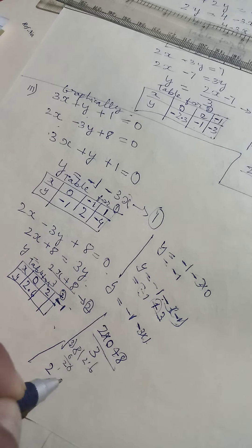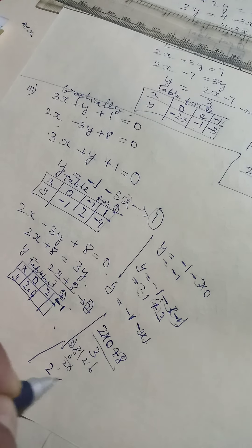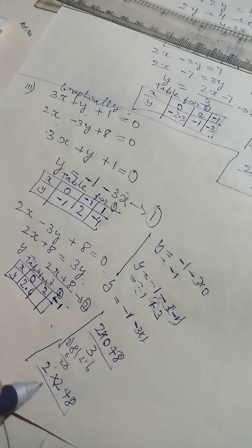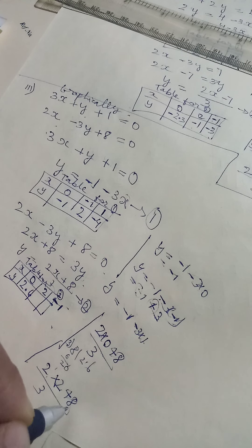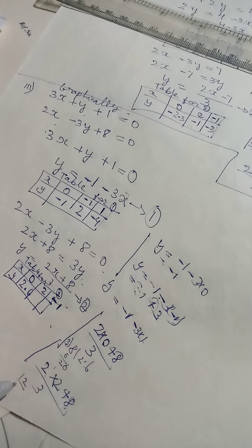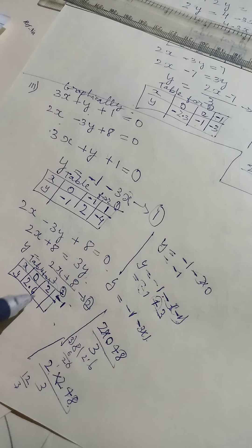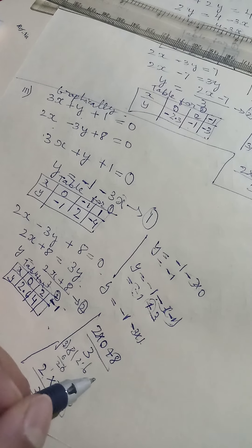Then next, in place of X, we can put 2. So 2 into 2 will be 4. 4 plus 8 will be 12. So 12 divided by 3, we get equal 4.